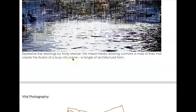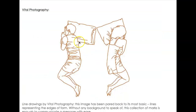Another contour drawing where the line weight does not change at all — the same weighted line throughout both figures — yet it's still very effective. As simple as this drawing is, the distance and the negative space between the figures conveys a sense of emotion and a feel for what's going on.